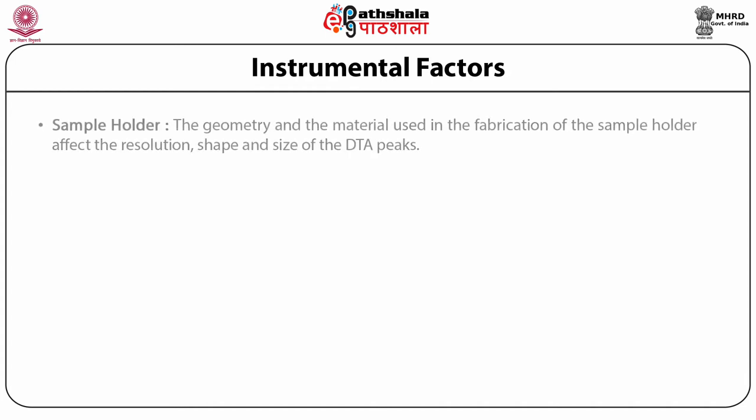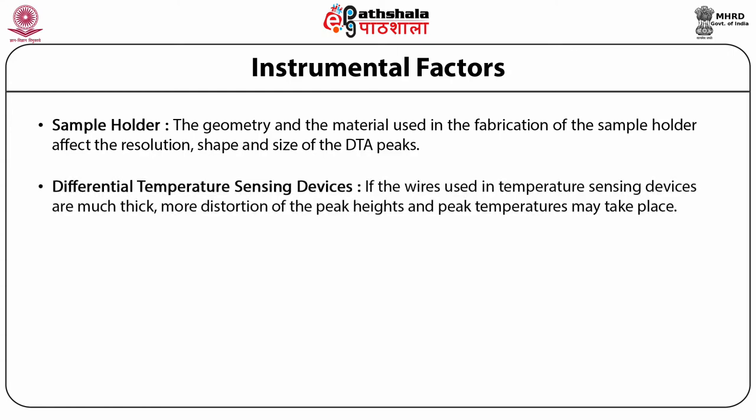Instrumental factors: the geometry and material used in fabricating the sample holder affect the resolution, shape, and size of the DTA peak. If sample holders are made from materials of high thermal conductivity such as metals, sharp exothermic peaks but relatively flat endothermic peaks are obtained. Differential temperature sensing devices: heats of transitions are much less than heats of reactions. If the wires used in temperature sensing devices are too thick, more distortion of peak height and peak temperatures may occur.